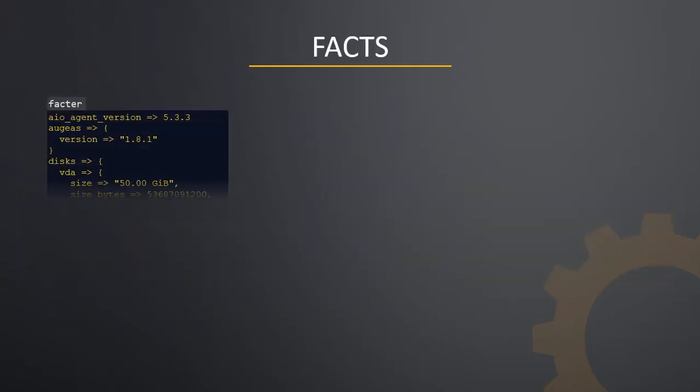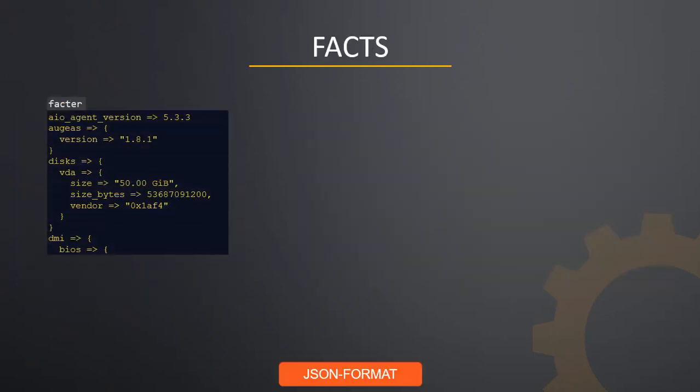Puppet Facts are a way of gathering data about Puppet agents. This data consists of host information, kernel information, network information, IP addresses, CPU, memory, file system, disk details, and much more.